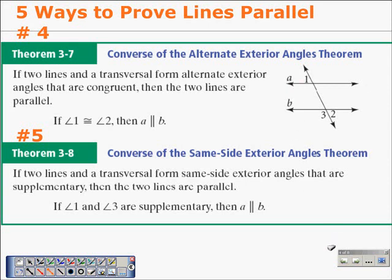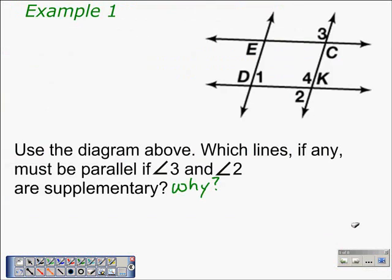Now that we've gone over the postulate and theorems from this lesson that can prove lines parallel, let's take a look at some problems. Example 1: here we have two sets of lines with some angles marked. Using the diagram, which lines, if any, must be parallel if angle 3 and angle 2 are supplementary? The angles in question are angle 2 and angle 3.